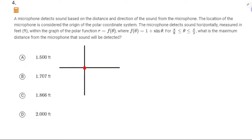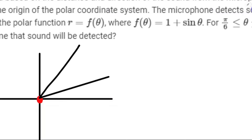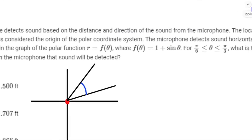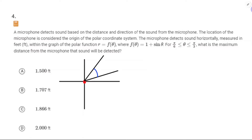Within the graph of 1 + sin θ — when sine theta is negative one, that's going to be zero, but that's only at 3π/2. We're looking at the interval π/6 to π/3 and the curve is r = f(θ). The graph is going to be getting farther from the origin.